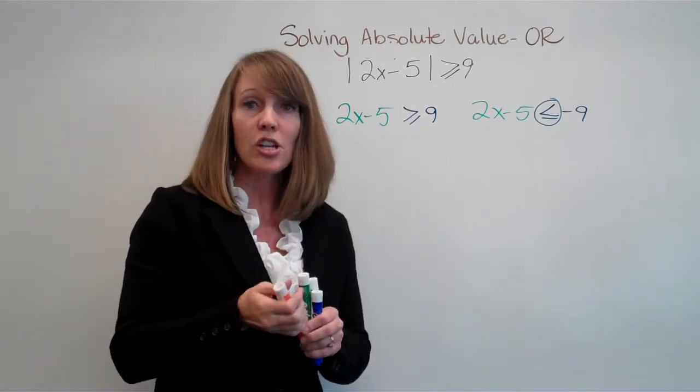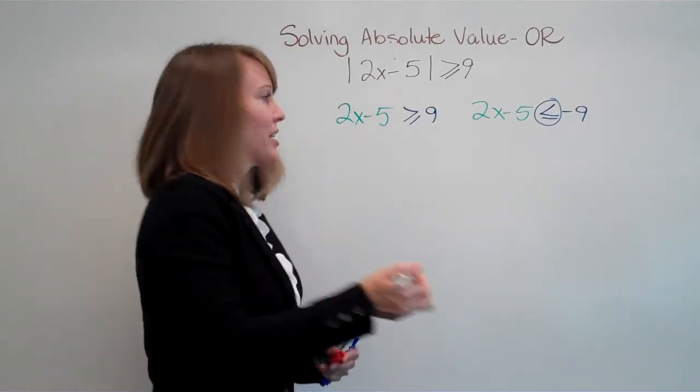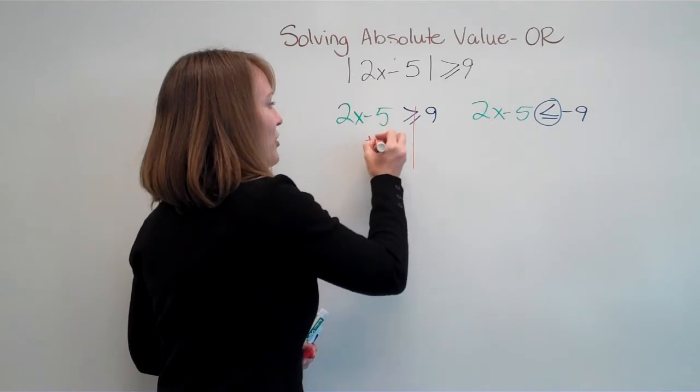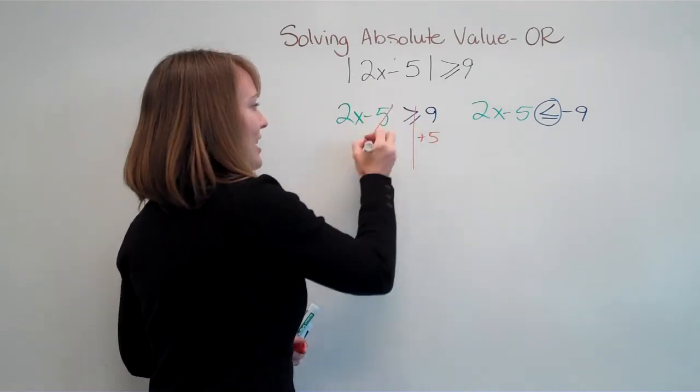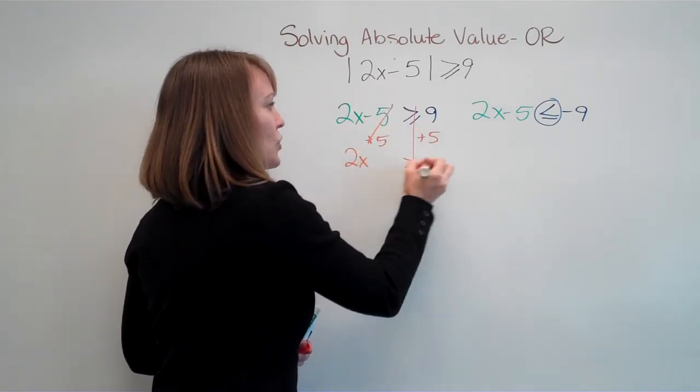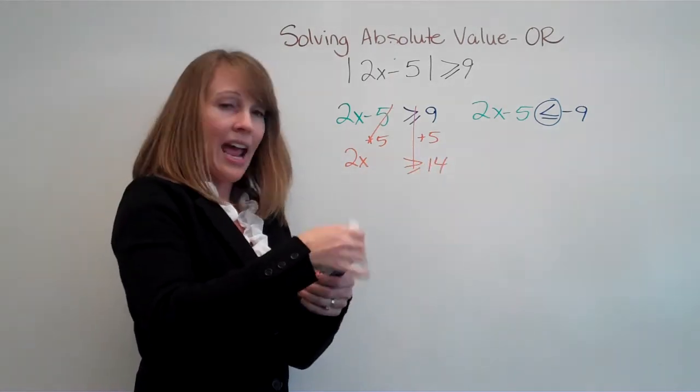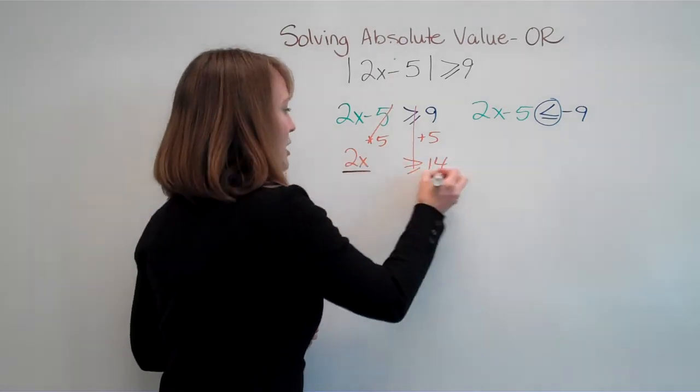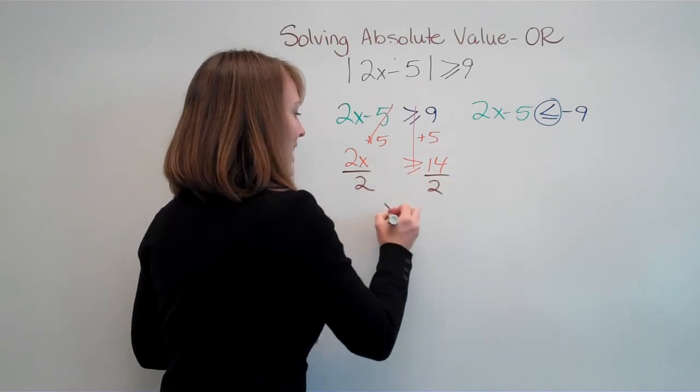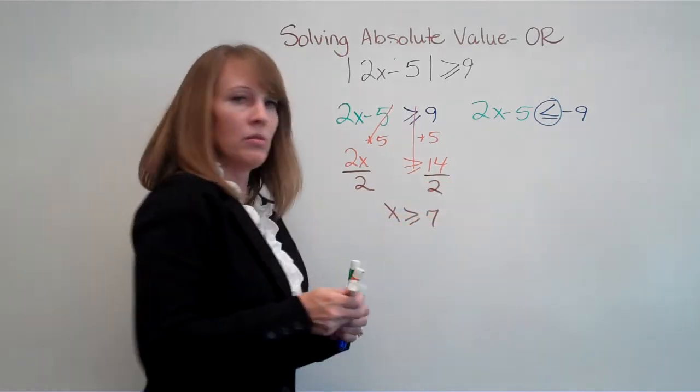All right, now we have two equations to solve, just like before. We like this part. So we're going to add 5 to both sides. These cancel out. We're left with 2x is greater than or equal to 14. And then when we divide both sides by 2, we're going to have x is greater than or equal to 7.